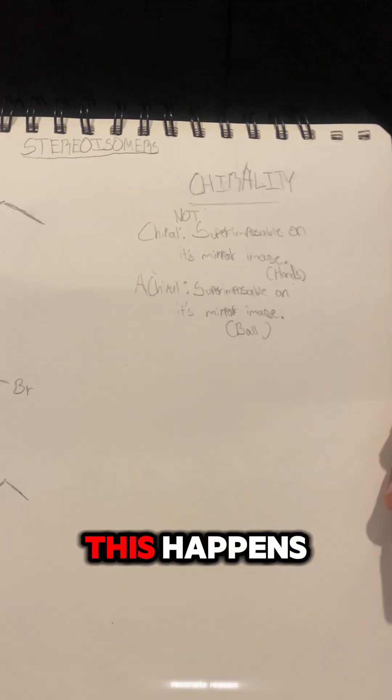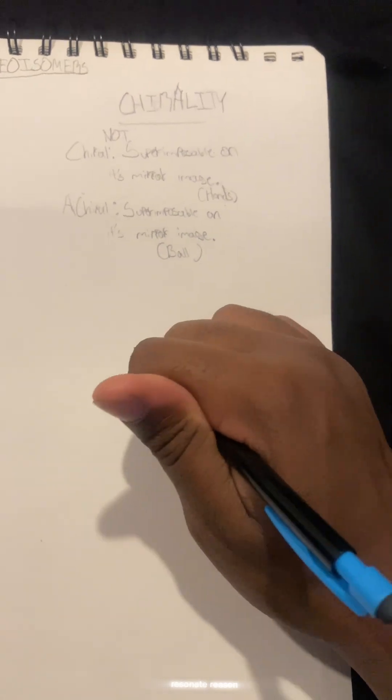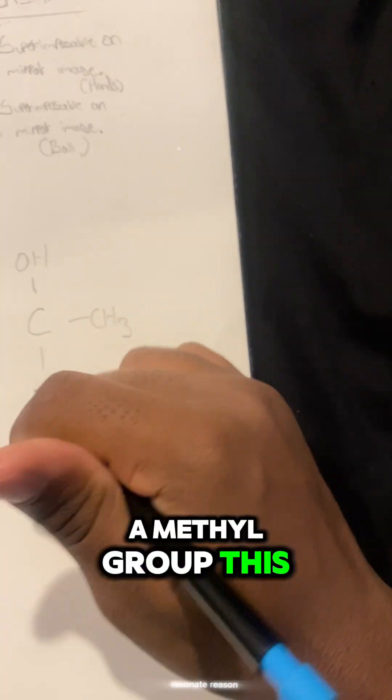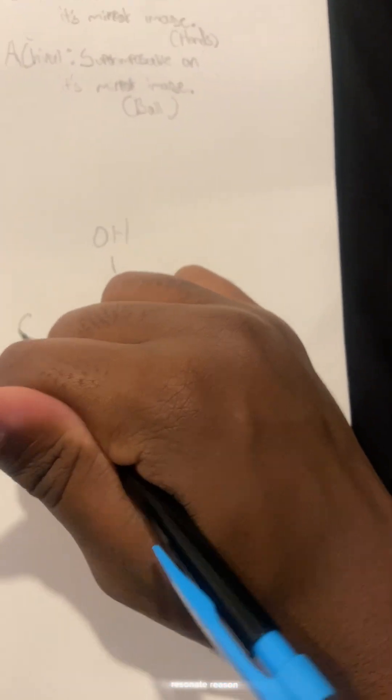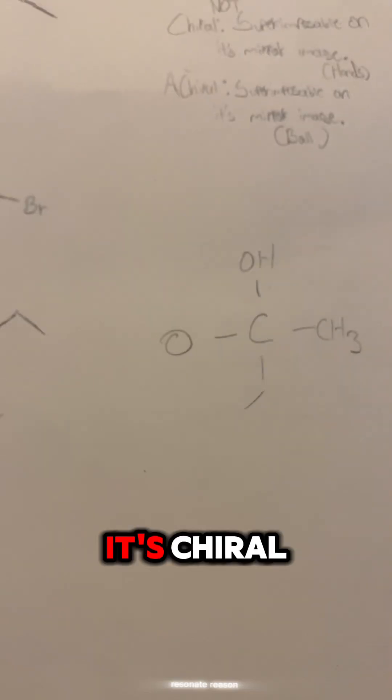In chemistry, this happens when a carbon atom is bonded to at least four different groups. So for example, we could have carbon, this could be an OH, this could be a methyl group, this could be an ethyl group, and this could be anything you want. But as long as this carbon is bonded to at least four different groups, it's chiral.